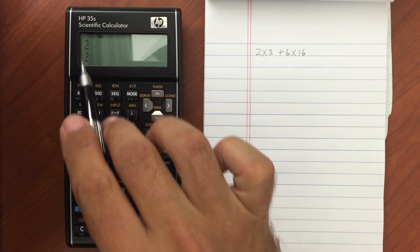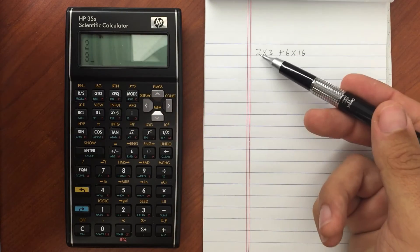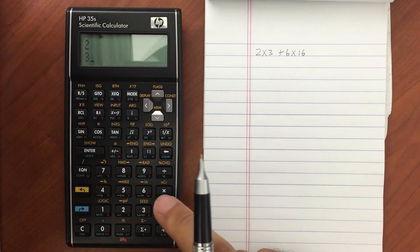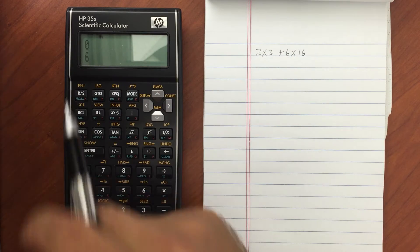So I've got 2 in my stack here. I put in my 3. I've got my 2 and my 3, just like here. Now I hit the multiply button, because that's what I want to do with these 2 numbers that are in the stack. And I get 6.